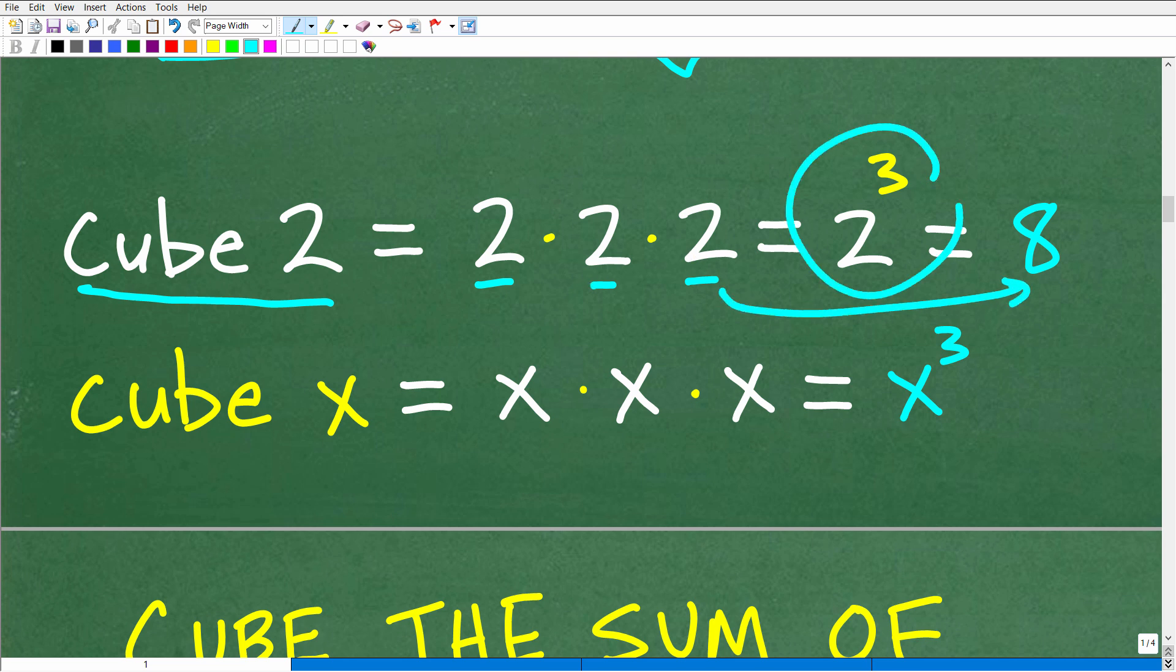One thing that we want to kind of keep in mind is that we can write this as a power. So 2 cubed, you can write as 2 to the third power. So this little 3 up here is what we call the exponent. The 2 is the base. So this is perfectly fine as well. But 2 to the third power, you could say as 2 cubed, just as you can say this is 2 squared or 2 to the second power.